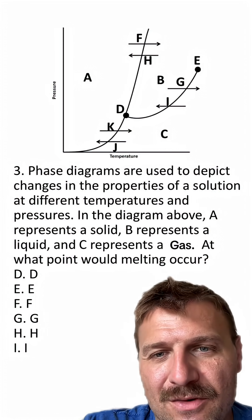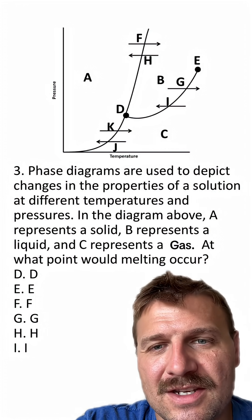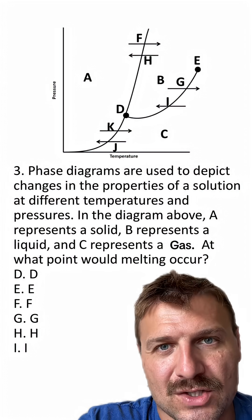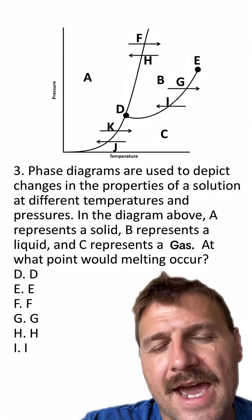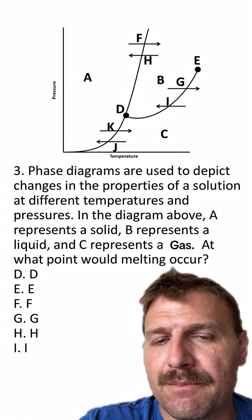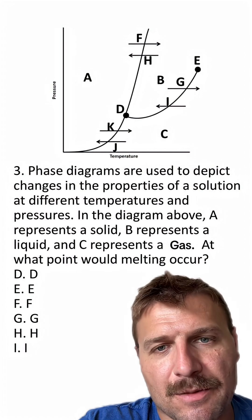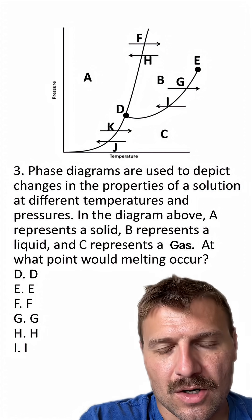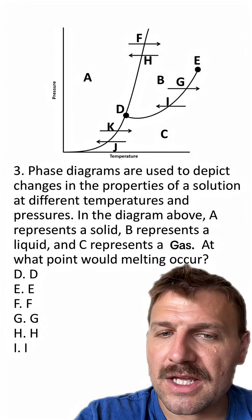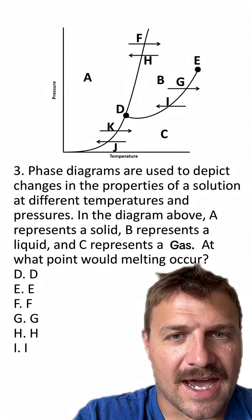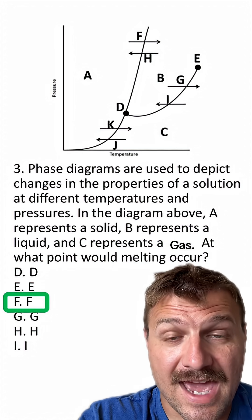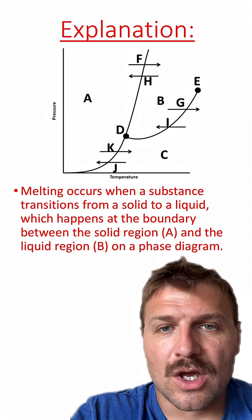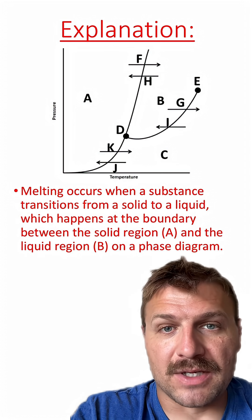Last question, number three. Phase diagrams are used to depict changes in the properties of a solution at different temperatures and pressures. In the diagram above, A represents a solid, B represents a liquid, and C represents a gas. At what point would melting occur? Remember, A is a solid, B is a liquid, and C is a gas. The answer here is F. Melting occurs when a solid becomes a liquid, meaning it's going from A to B, which is shown by arrow F.